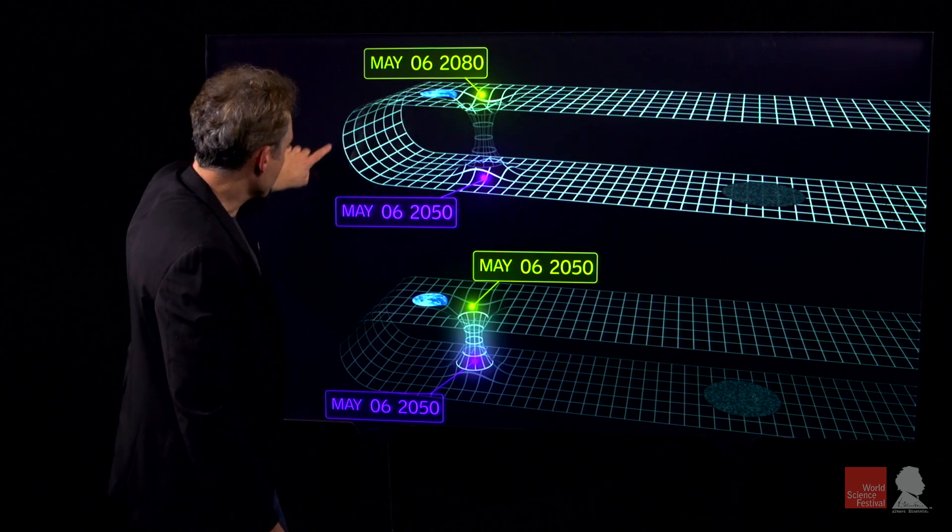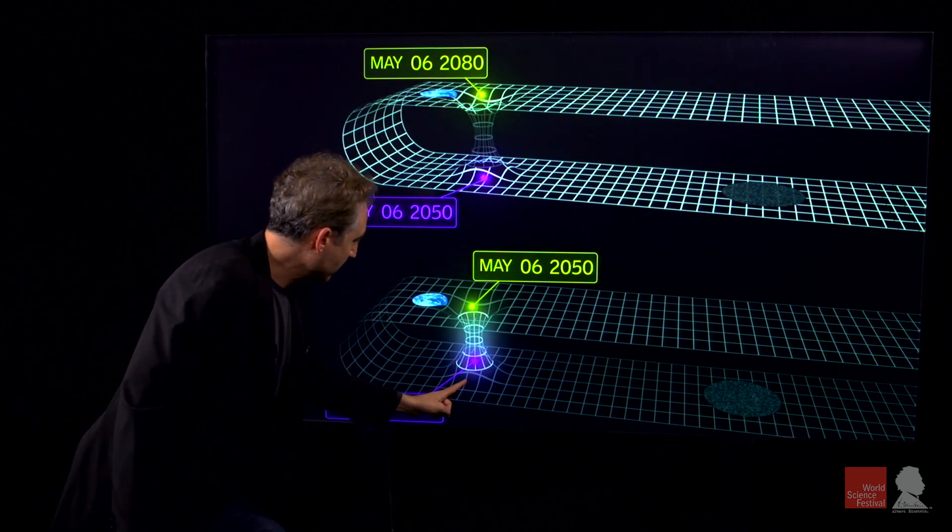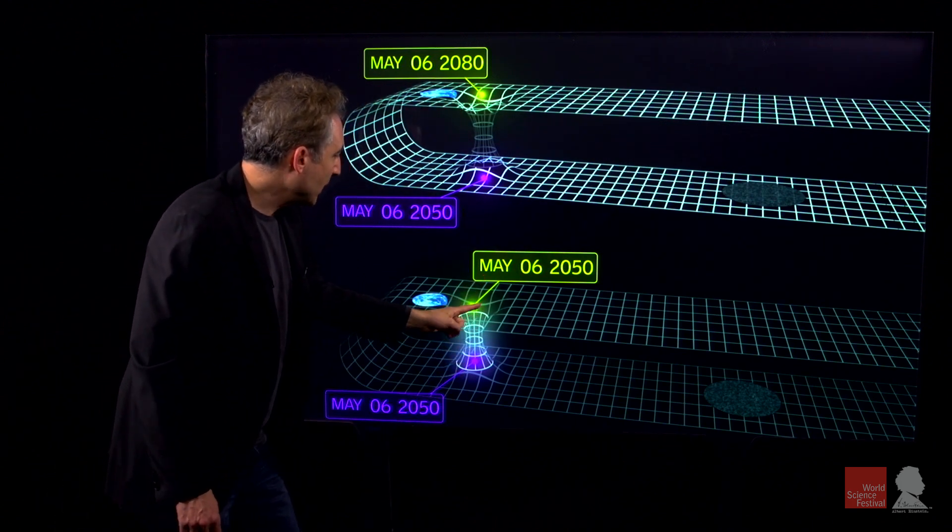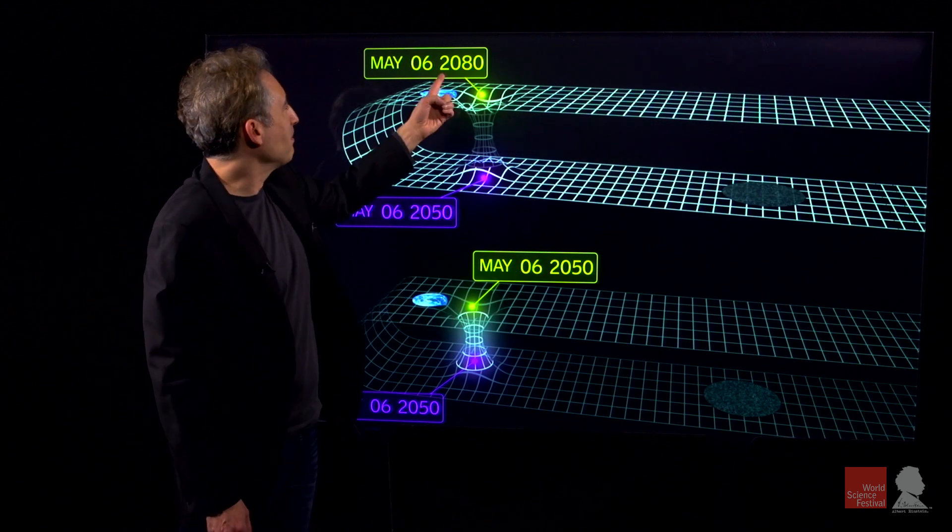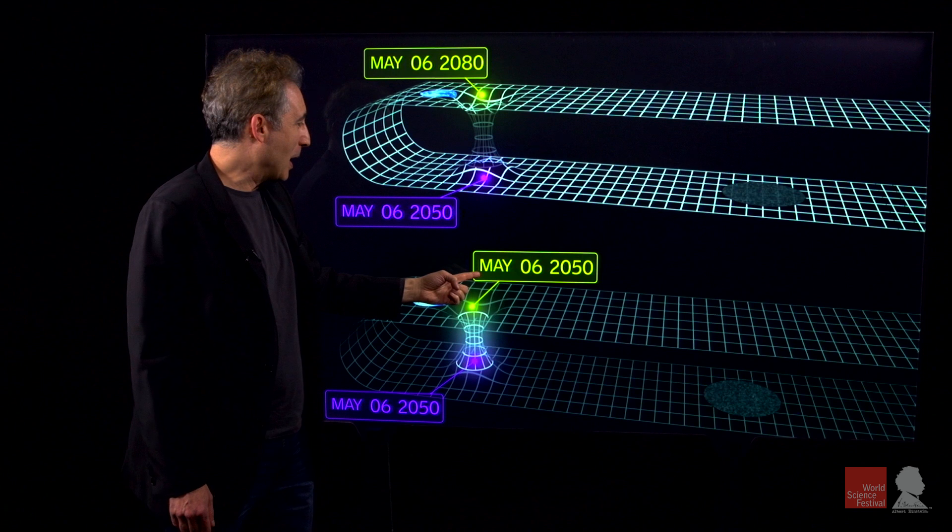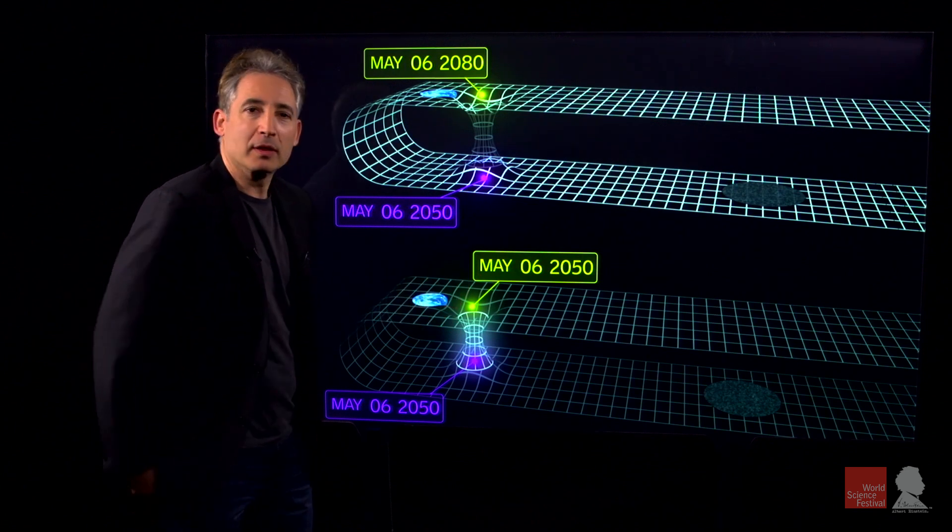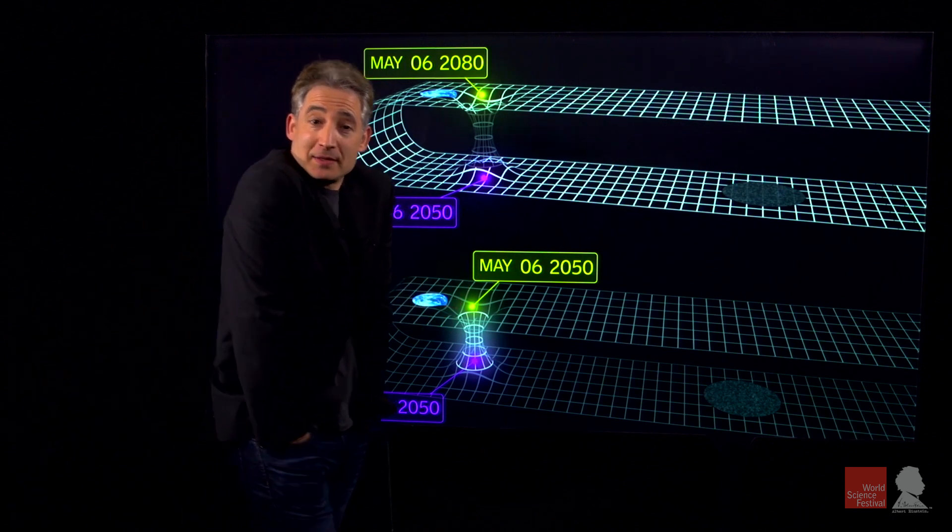So we start here, we go into this picture and we go through the wormhole itself and we'll end up near Earth at May 2050. We started at May 2080 near Earth, we wound up at May 2050 near Earth, we've gone 30 years into the past.